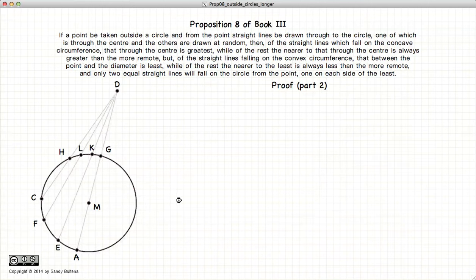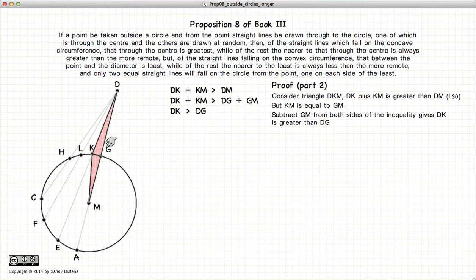For the second part of this proposition, let's consider the triangle. I don't know what color that is, but we'll call it pink. Now, DK plus KM will be greater than DM. But DM is equal to DG plus GM. If we look at this equation here, since KM and GM are equal, they are the radii of the same circle, we can effectively cross those out, GM and KM. And we are left with DK is greater than DG.